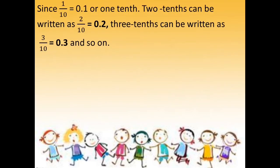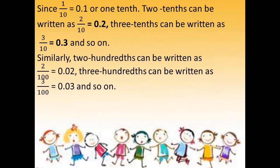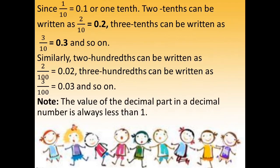Since 1 by 10 is equal to 0.1 or one-tenth, two-tenths can be written as 2 by 10, which equals 0.2, and three-tenths as 3 by 10, which equals 0.3, and so on. Similarly, two-hundredths can be written as 2 by 100 equals 0.02, and three-hundredths as 3 by 100 equals 0.03, and so on. Note that the value of the decimal part in a decimal number is always less than 1.